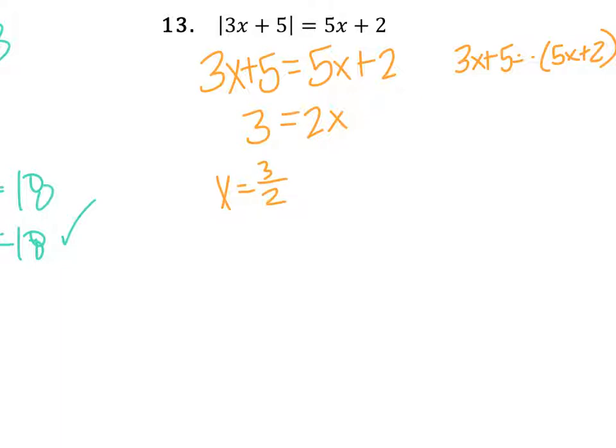Over here I'd have 3x + 5. Sorry about my handwriting, guys. I'm trying my best. Equals negative 5x minus 2. I'd add 5x to both sides and I'd subtract 5 from both sides. So add 5x, I'd have 8x equals negative 7. Which makes x equal to negative 7 eighths.